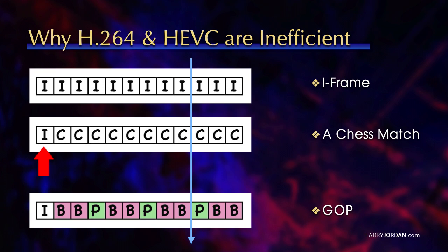Which means in order for me to be able to see what the chessboard looks like, I've got to go back to the very beginning, that I-frame, and solve or add each of those changes until I get to the frame that I want to look at, indicated by that blue arrow.